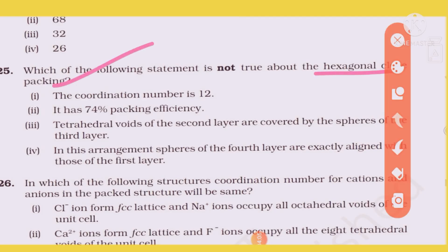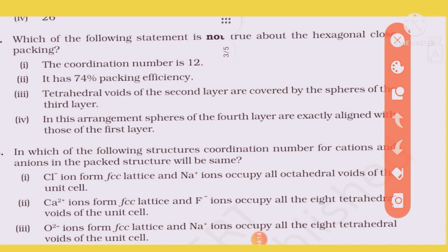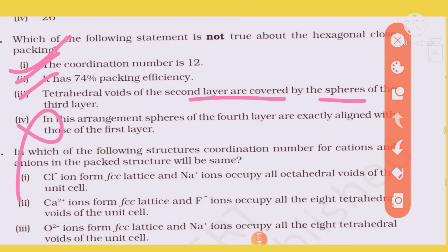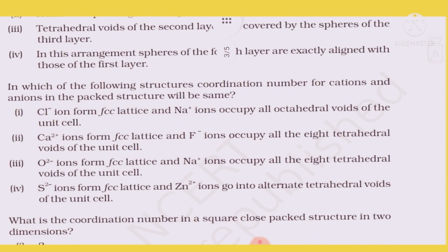Hexagonal close packing (HCP): coordination number is 12, packing fraction is 74%, and it contains tetrahedral voids. Reviewing the true/false statements about HCP — the coordination number of 12 and packing fraction of 74% are both true.